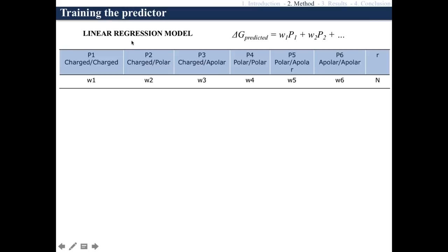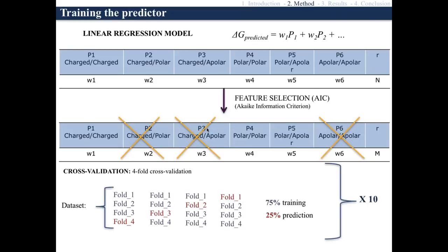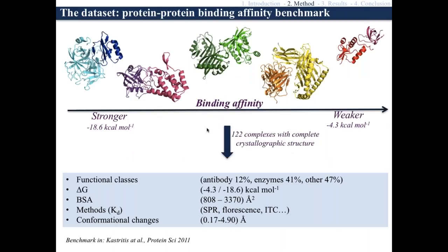We tried to train a predictor and trained a linear regression model on those properties. We also used other kinds of classification, but the one according to polar, apolar, and charged properties of the residues resulted to be the best one. We performed a linear regression model defining the weight for each of these properties. We also applied a feature selection criterion because with many features you might have a problem of overfitting. We applied a feature selection method and also cross-validated the results using a four-fold cross-validation in which the dataset was divided into 75% training and 25% prediction, repeated 10 times.